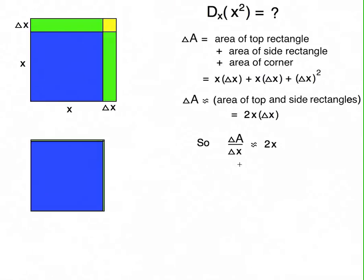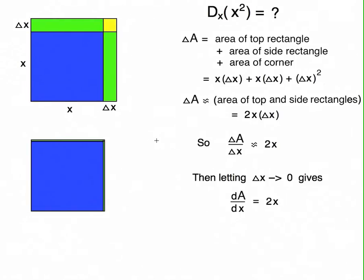So the average rate of change is pretty close to 2x, and it's closer and closer to 2x the closer delta x gets to zero, so that allows us to take the limit. When delta x approaches zero, the average rate of change, the limit of that is the actual instantaneous rate of change, the derivative, and that's equal to 2x.